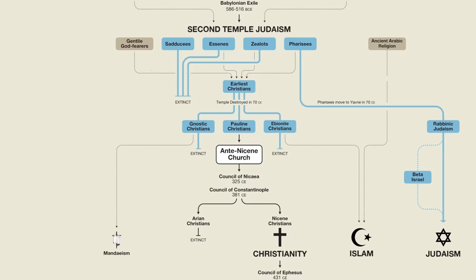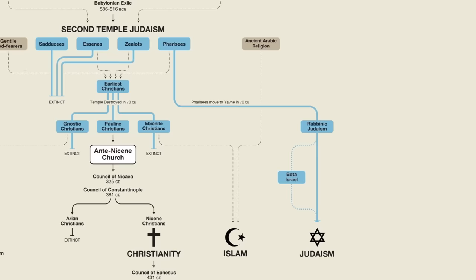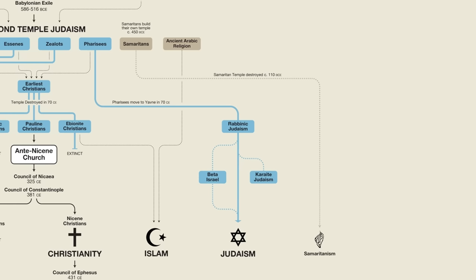I also received several requests to include the Samaritans and the Karaites, so let's go ahead and add them to the chart. Some people, including the Samaritans themselves, think that the Samaritan religion is a direct continuation of the religion followed by the Northern Kingdom of Israel prior to the Babylonian exile. However, from an academic perspective, it's more likely that the Samaritans emerged early in the Second Temple period when, around 450 BCE, they built their own temple on Mount Gerizim. There's a lot more I could say about the Samaritans, but since this series is focused on Christianity, I'll perhaps make a separate video about them at some other point.